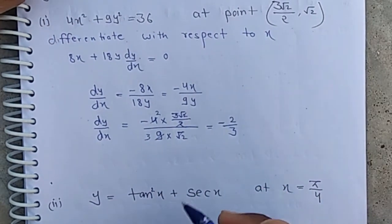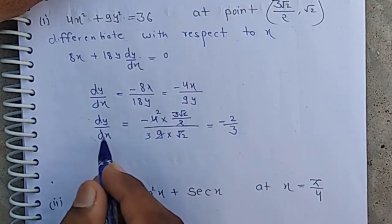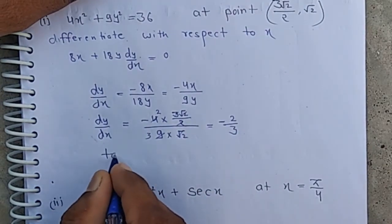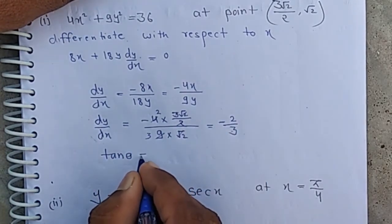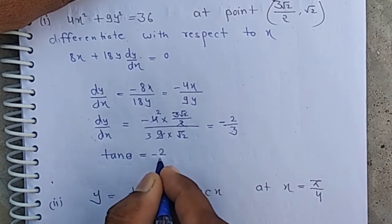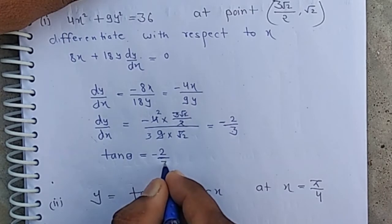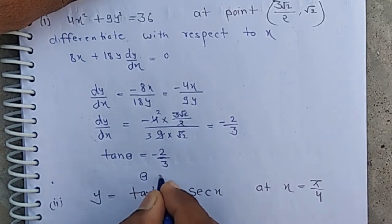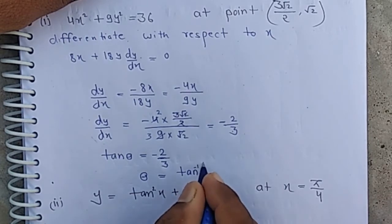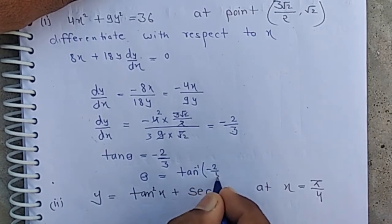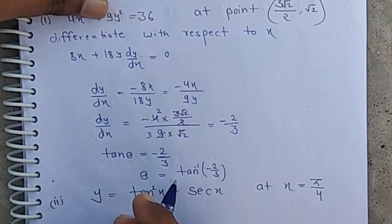If the question asks for the inclination of the tangent, we set dy/dx equal to tan θ. So tan θ = −2/3, and θ = tan⁻¹(−2/3). This is the inclination of the tangent from the positive direction of the x-axis.